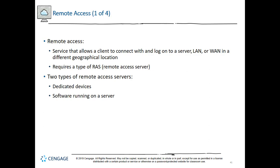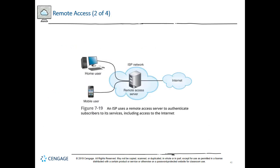Two types of remote access servers exist. Dedicated devices — such as Cisco's AS5800 access servers — are dedicated solely as a RAS to perform authentication for clients. An ISP might use a dedicated device to authenticate client computers or home routers to access ISP resources and the internet. Software running on a server is the other option — for example, Direct Access, first introduced in Windows Server 2008 R2, can automatically authenticate remote users and computers to the Windows domain and its corporate network services.